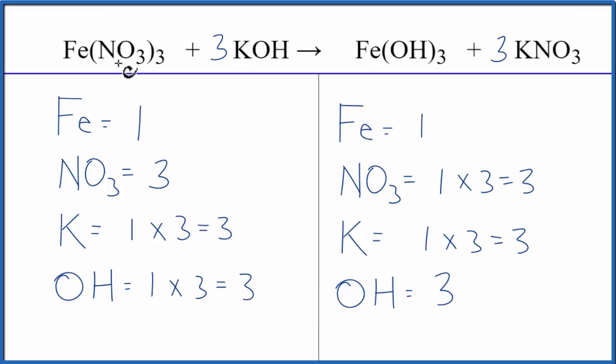So you can see by counting these polyatomic ions as just one item, if they appear on both sides of the equation, that makes the balancing a lot easier and less prone to error. This is Dr. B with the balanced equation for Fe(NO3)3 plus KOH. Thanks for watching.